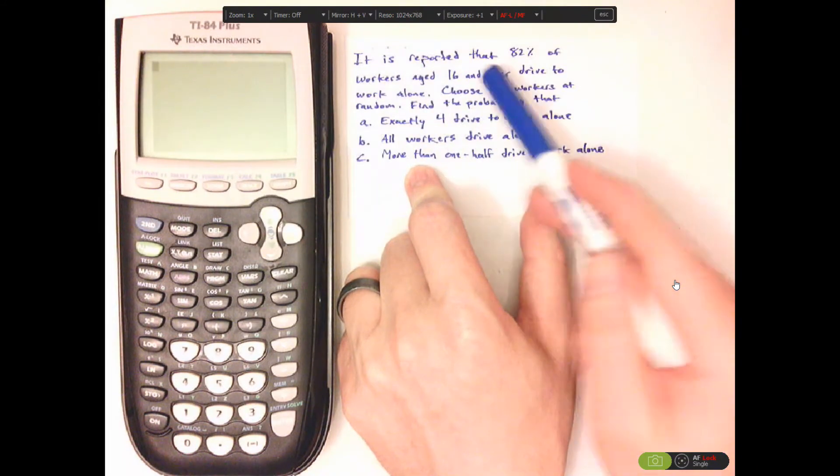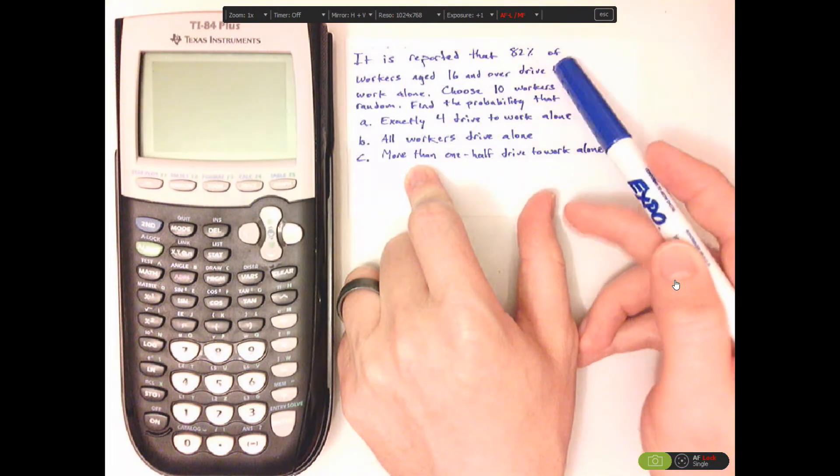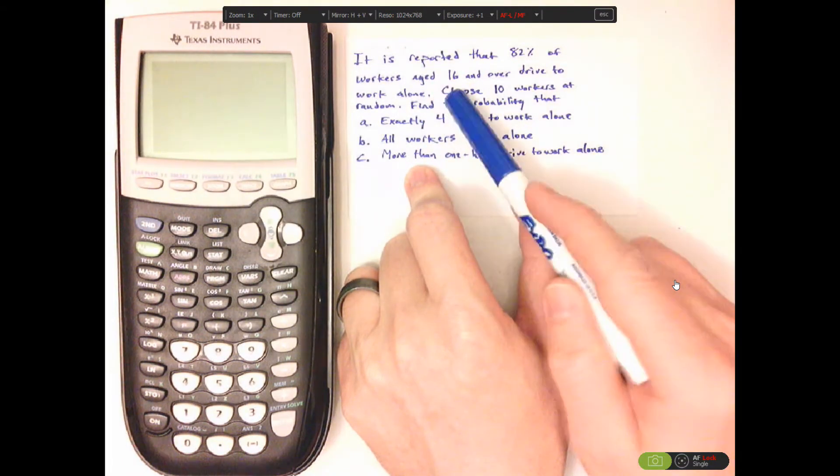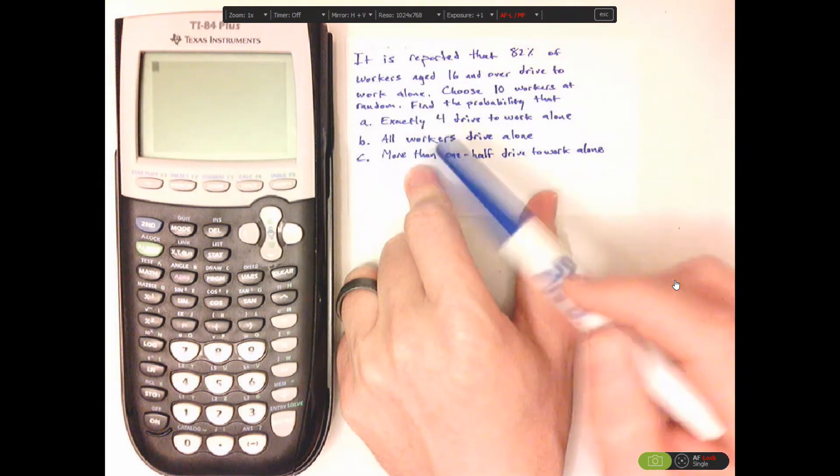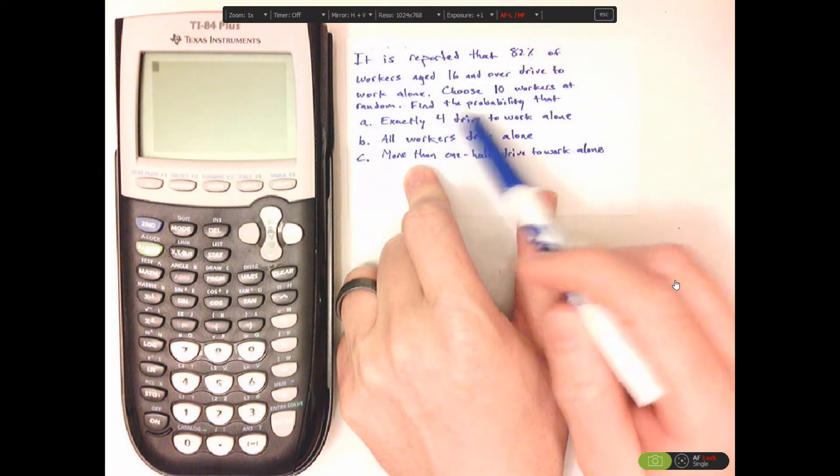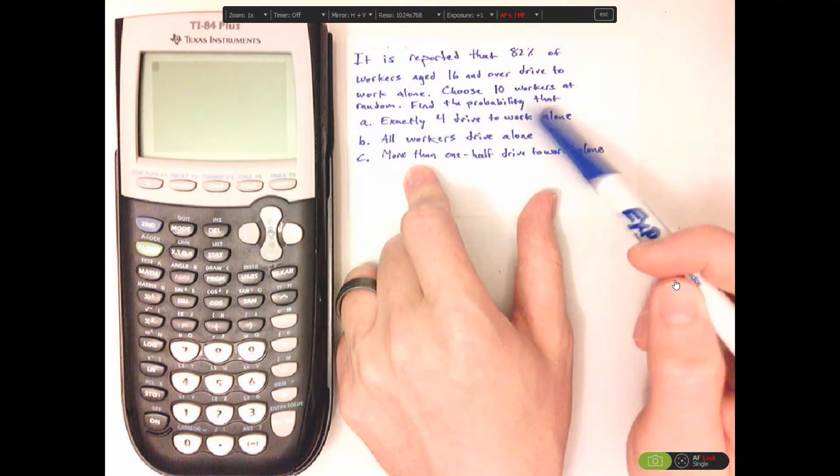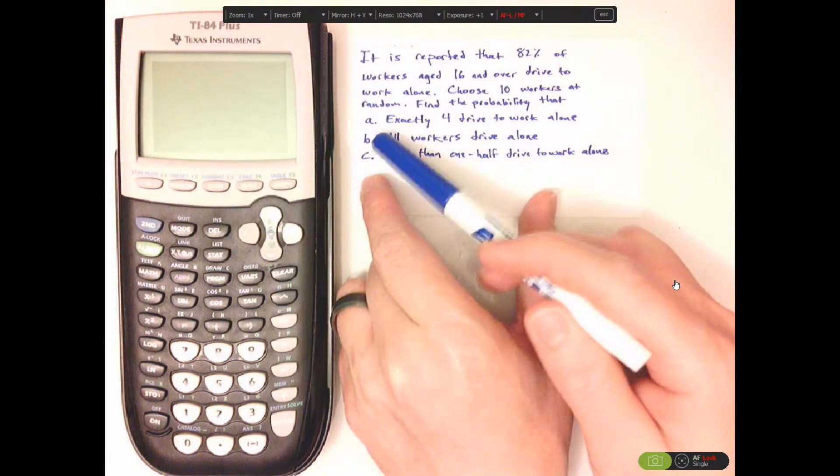Next, it is reported that 82% of workers age 16 and over drive to work alone. Choose 10 workers at random. Find the probability that, and then you have A, B, C. A is exactly four drive to work alone.